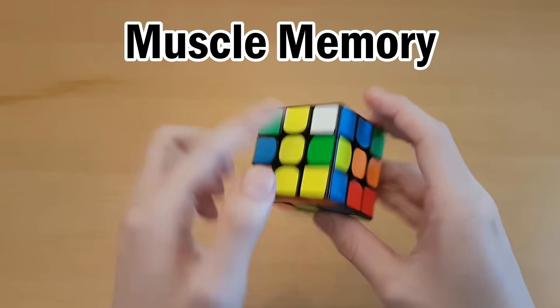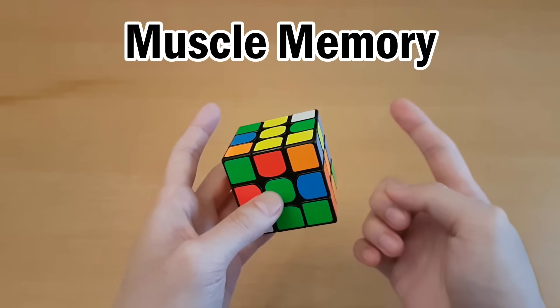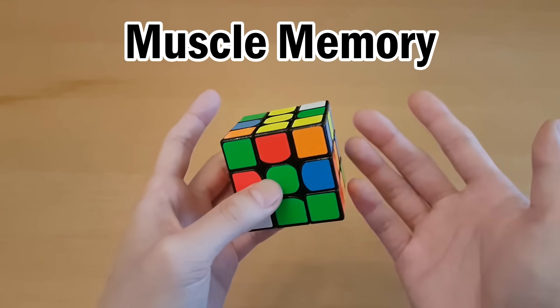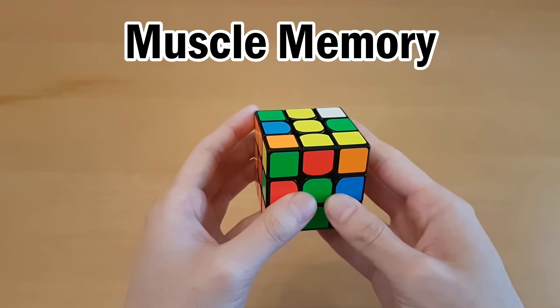So in other words, anytime you see an F2L pair, you have to be able to do it quickly and without looking. Because if you had to look at it, that means you're not really familiar with what you have to do in order to solve it.